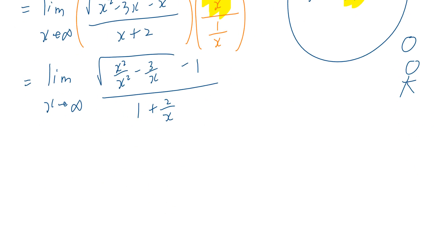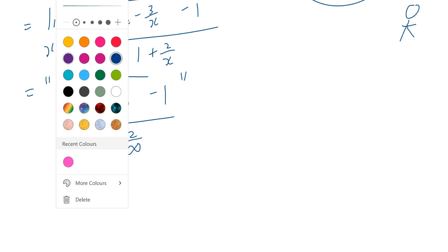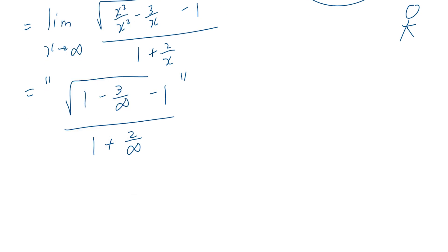Now, look what happens. You can go back and plug in infinity now. This is 1 minus 3 divided by infinity minus 1, all over 1 plus 2 divided by infinity. Be mindful, in the rules of limits, any non-zero number divided by infinity is going to be 0.